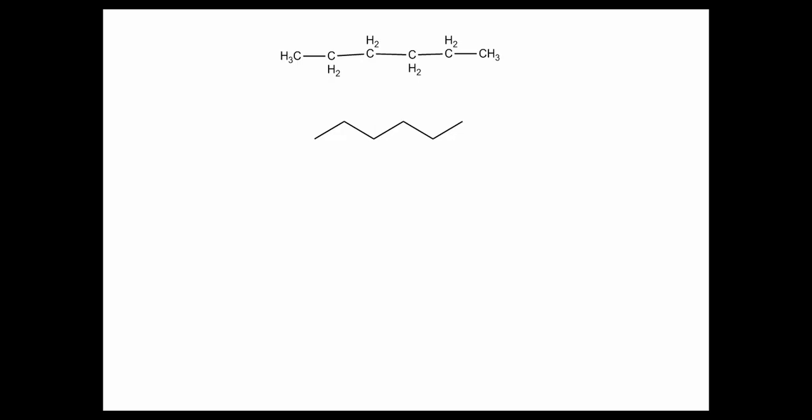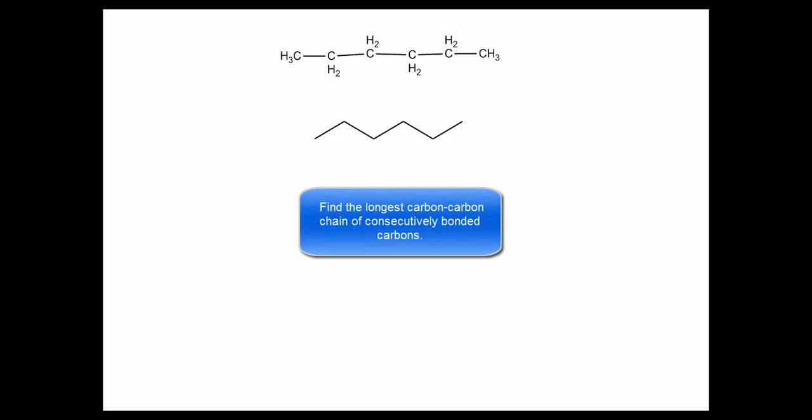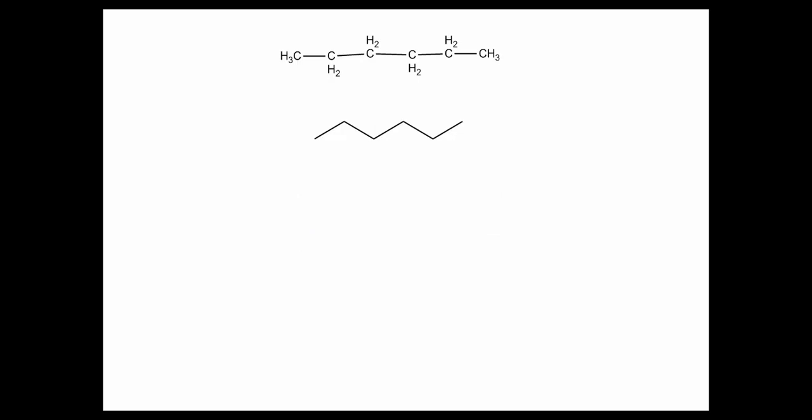Here is an alkane. We know this is an alkane because all of the carbon-carbon bonds are single bonds. We see that there are six carbons connected in a chain, and the longest chain of consecutive carbons is six. There are no branches, so this is a hexane molecule.